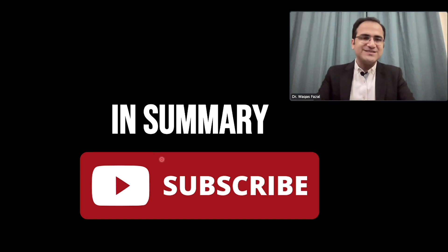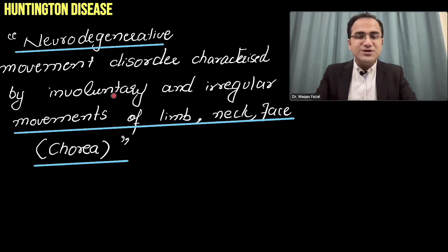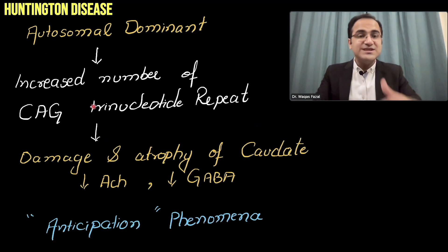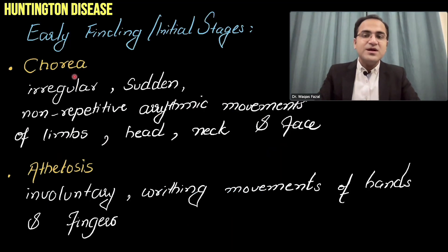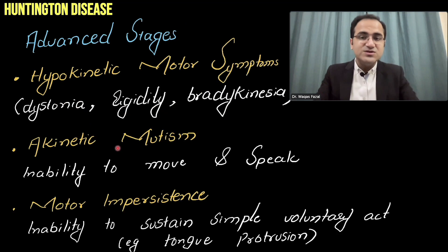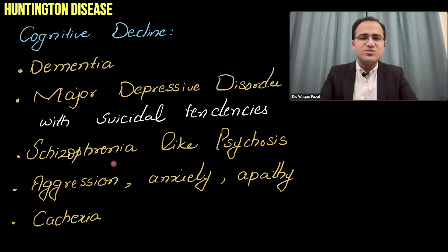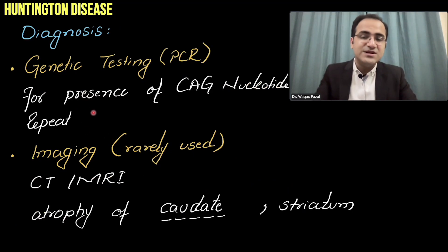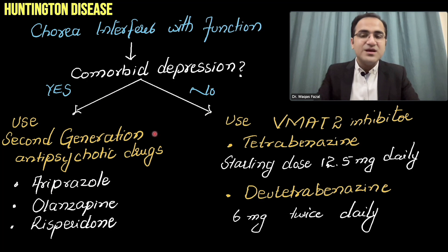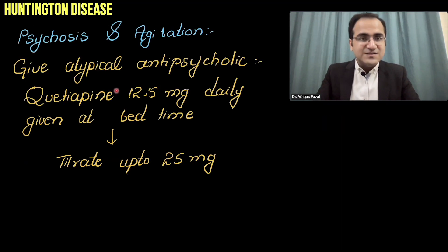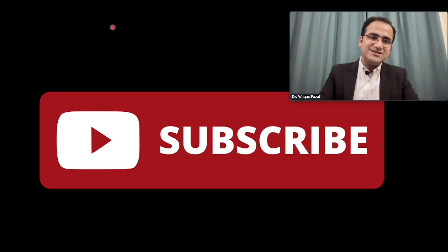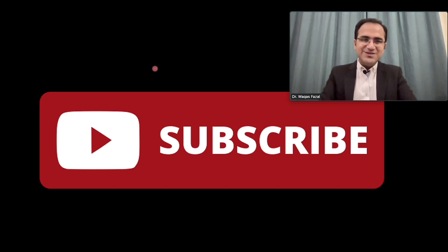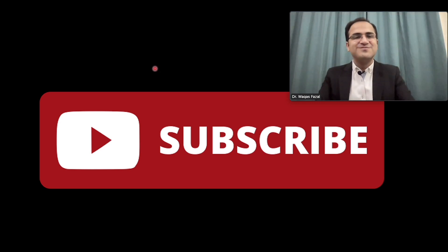In summary: Huntington disease is a neurodegenerative disease causing chorea. It is autosomal dominant with CAG trinucleotide repeats and caudate atrophy, with anticipation across generations. Symptoms include chorea, athetosis, nystagmus, urinary incontinence, and in advanced stages, akinetic mutism and cognitive problems including major depressive disorder. Management addresses chorea, psychosis, agitation, depression, and anxiety.